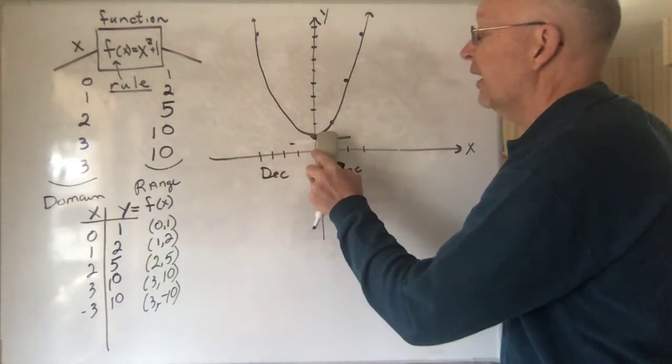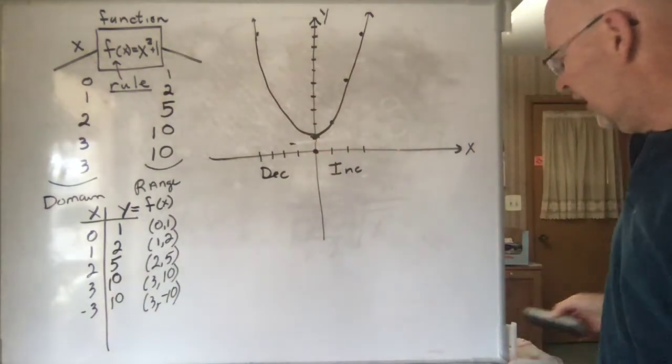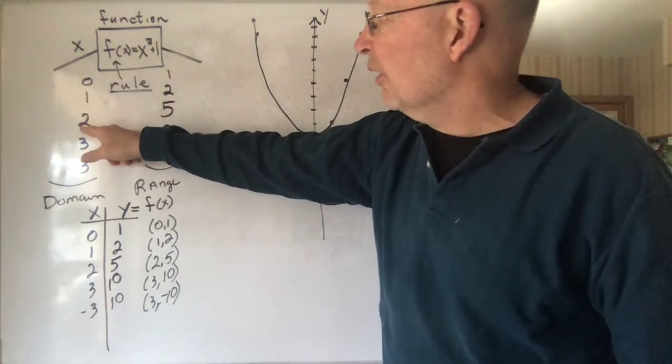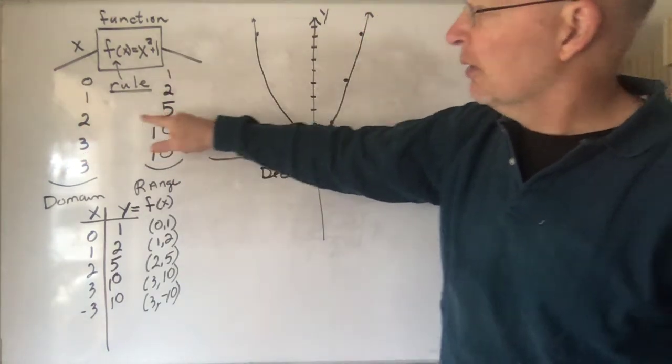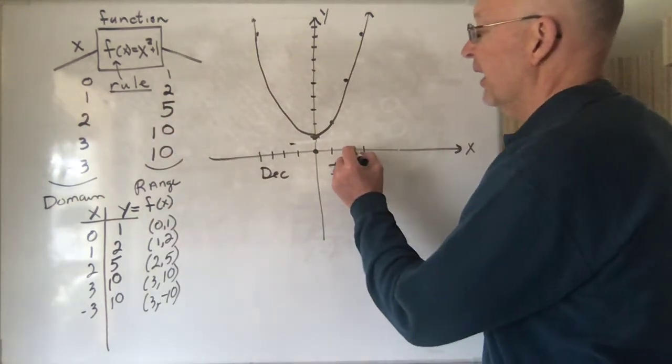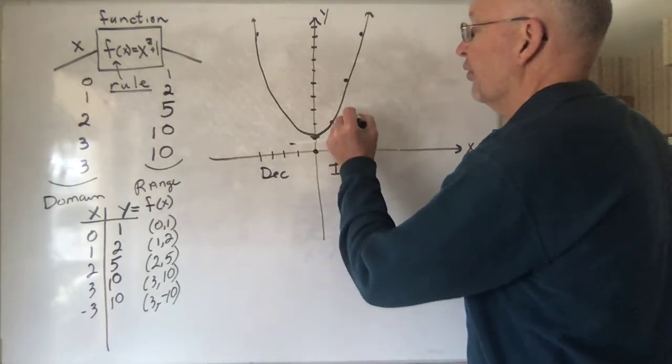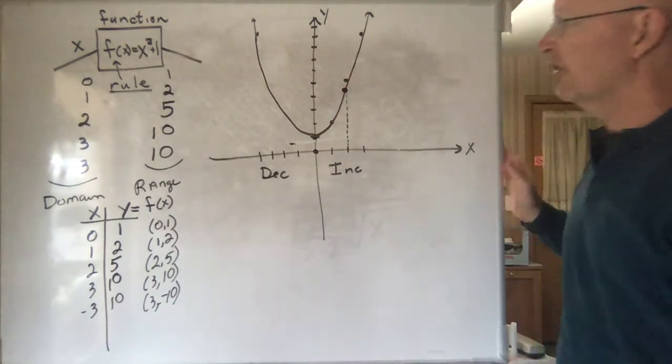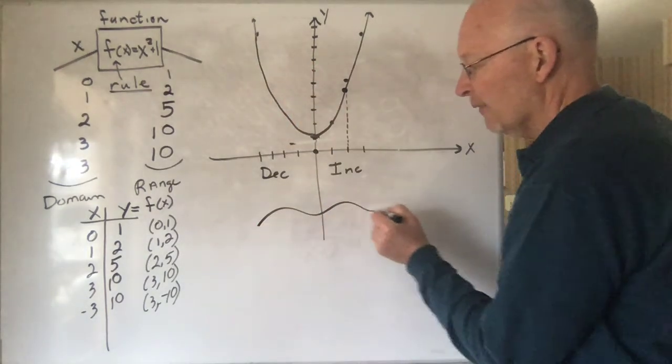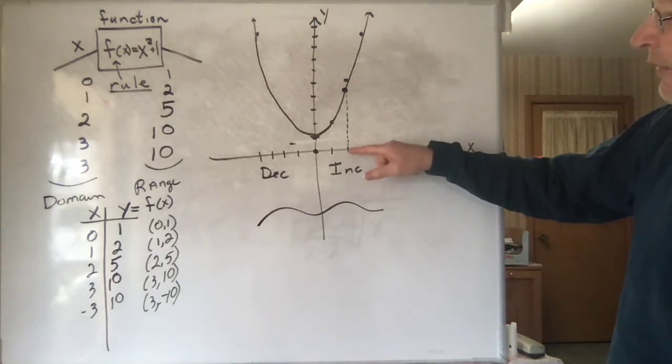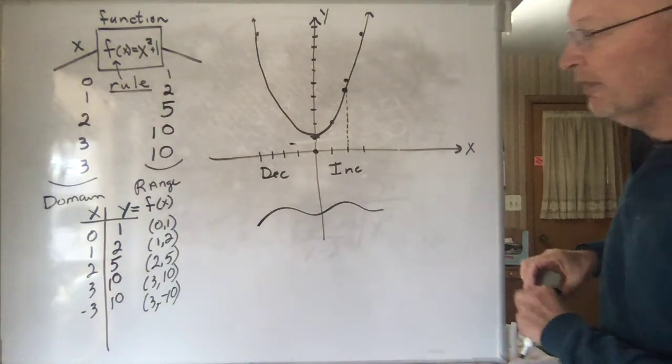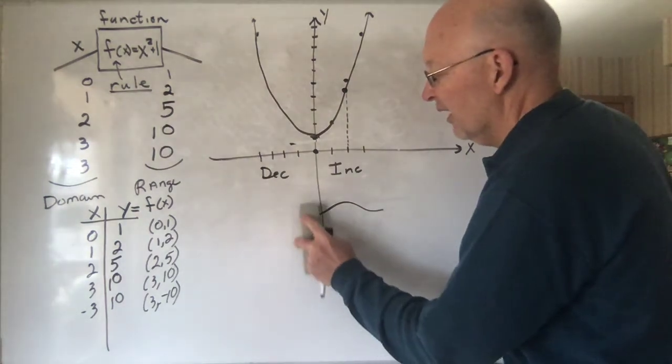One thing to notice right away about a function is that just by the way we define it and construct it, for any value that goes in, we're only going to get one value out. So, for any number that goes in, you get one number out, which means graphically that for any value here, there's going to be only one y value which is associated with it. It would be impossible to have a function that would look like that and also have a part down here because that would indicate that for this value of x, I'm getting two different values of y out. So, that would not be a function.